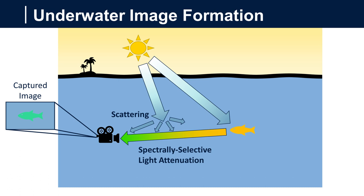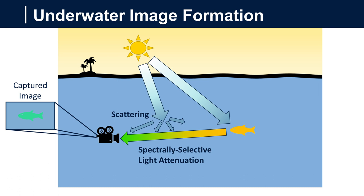The second phenomena is backscattering, whereby light reflected off particulate in the water mixes with light reflected from the target, creating a haze over the image. Together, these two phenomena produce images that do not capture the true colors of the scene.